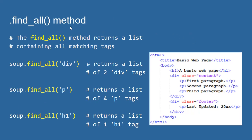We also have a find_all method. It works just like find except it returns all matching tags — specifically, it returns a list structure containing all matching tags. For example, soup.find_all('div') on an HTML with two div tags returns a list containing both. soup.find_all('p') with four p tags returns a list of all four. soup.find_all('h1') with only one h1 still returns a list — with just that one element. The find_all method always returns a list data structure.